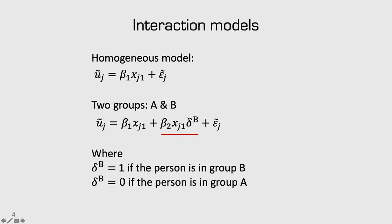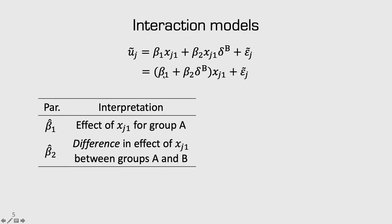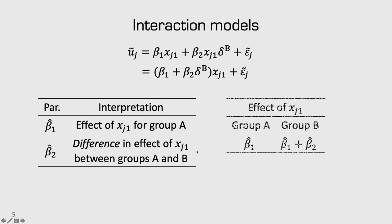The addition of this term allows us to separate out the difference in the effects of x1 for group A and group B. If you rearrange this model, beta 1 is the effect of x1 for group A — if we have a group A respondent, the delta term is 0 and beta 2 disappears. But if the data point is from group B, beta 2 gets added in, giving beta 1 plus beta 2 times x1. So beta 2 isn't the effect for group B — it's the difference in effects between groups A and B. For group A, the effect is just beta 1; for group B, it's beta 1 plus beta 2.